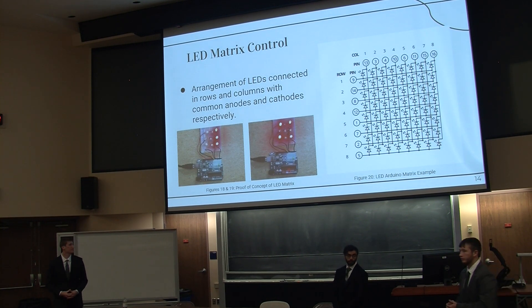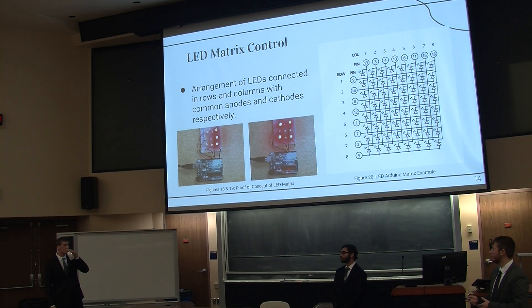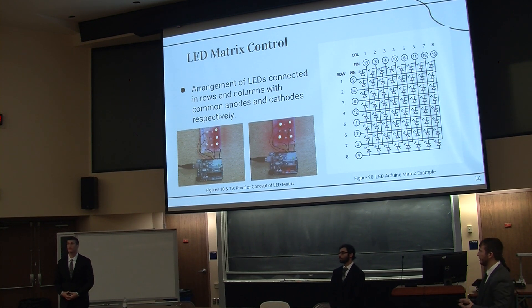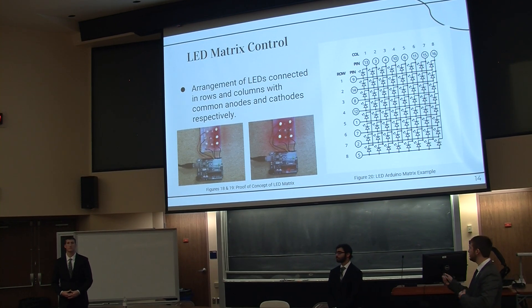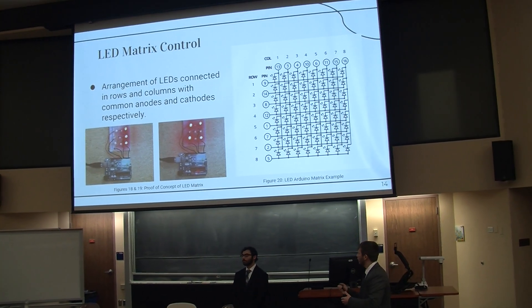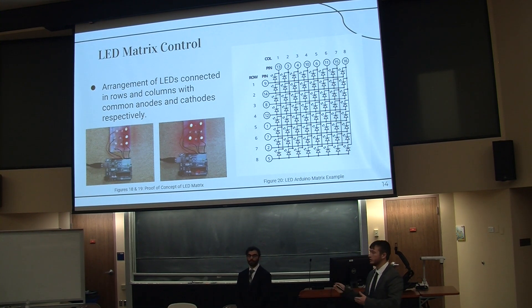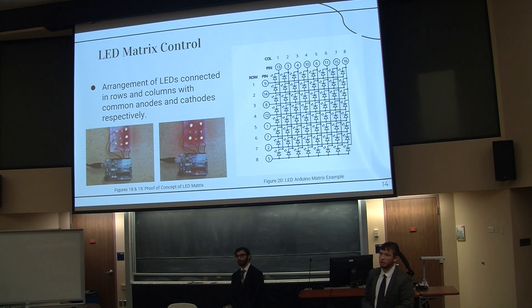We plan on controlling these LEDs through the use of an LED matrix — an arrangement of LEDs in rows and columns where rows share common anodes and columns share common cathodes. We have proven this concept to work, as seen in the bottom corner. Unfortunately, we are not able to control a prime number of LEDs with an LED matrix alone. To solve this, we plan on adding one additional LED outside of the matrix that we can call upon if we need a prime number of LEDs.